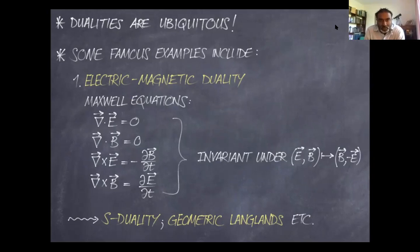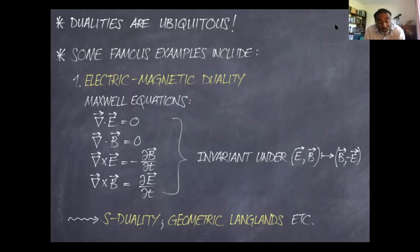Probably one of the first examples of a duality one would encounter is electric-magnetic duality. This is the statement that Maxwell's equations in vacuum — four equations with straightforward physical content — are invariant if you exchange the electric and magnetic fields: everywhere you see an E you replace it with B, and everywhere you see B you replace it with minus E. This can be formulated covariantly as what differential geometers call Hodge duality in four dimensions.